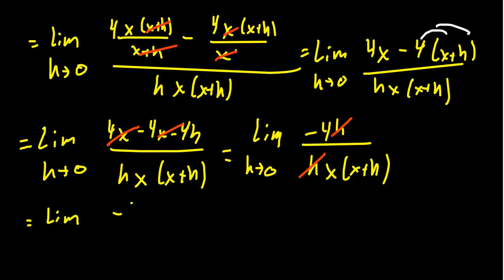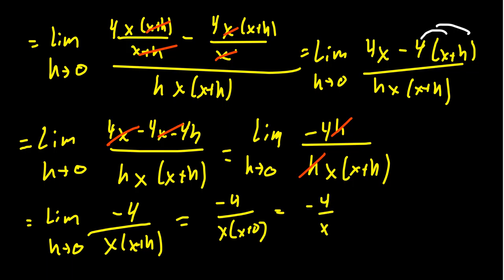In which case then we get the limit of negative 4 over x times x plus h as h goes to 0. So although there's still an h in the denominator, do notice that if we set h equal to 0, we're not going to divide by 0 anymore. We're going to get negative 4 over x times x plus 0. The denominator is actually going to become just an x squared. And this is then the derivative of our original function 4 over x.